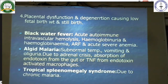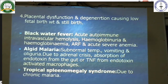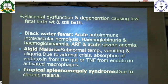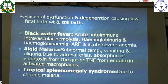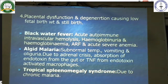Other manifestations of malaria include blackwater fever — an acute immune intravascular hemolysis leading to hemoglobinuria, hemoglobinemia, acute renal failure and acute severe anemia. Algid malaria represents subnormal temperature, vomiting and oliguria due to adrenal crisis; absorption of endotoxin from the gut or tumor necrosis factor from the endotoxin causes activation of macrophages. Tropical splenomegaly syndrome is caused by chronic malaria.